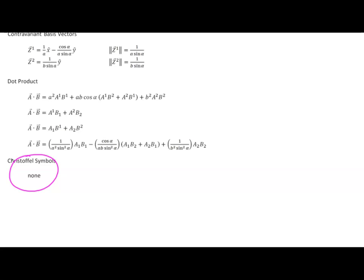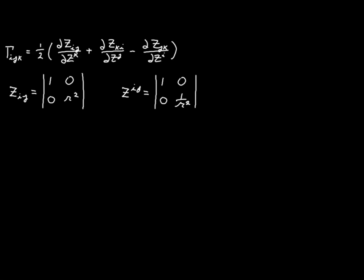We'll turn our attention now to plane polar coordinates. Here I've copied down the metric tensors — on the left the covariant metric tensor, and on the right the contravariant metric tensor. In this two-dimensional case, each of the values of i, j, and k can assume values of one or two, which means we have eight different possibilities for our Christoffel symbol.